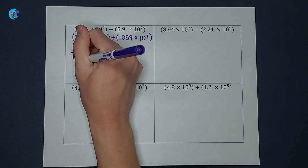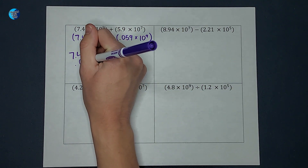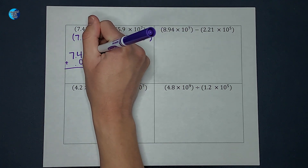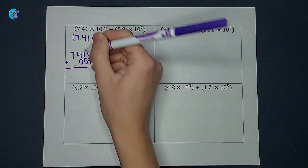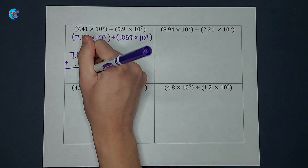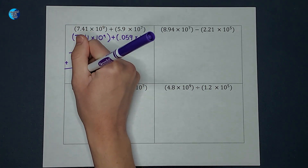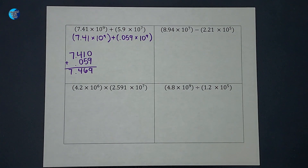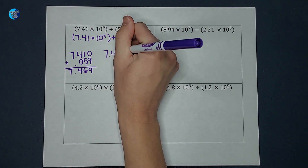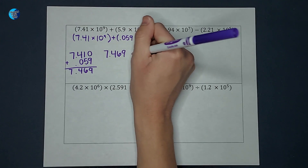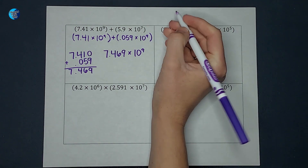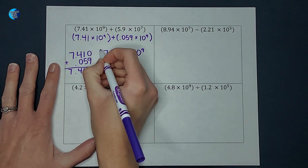Now that these are both 10 to the ninth, I can just add the two numbers. I'll do 7.41 plus 0.059, sticking a zero in to line up the decimals. 0 plus 9 is 9, 5 plus 1 is 6, bring down the decimal — 7. I end up with 7.469 times 10 to the ninth. That is my answer in scientific notation.